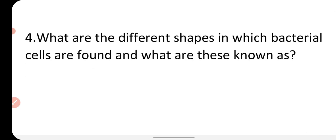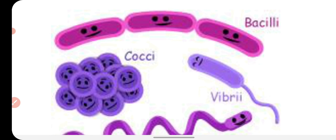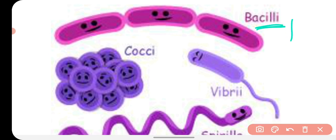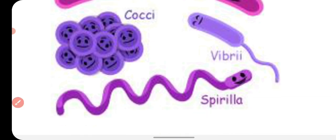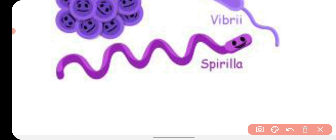The next question is: what are the different shapes in which bacterial cells are found and what are these known as? The main basic shapes are: first, bacilli, which occurs in rod shape; second, cocci, in which the shape of the bacteria is rounded or spherical; third, vibrio, in which the shape is in the form of a comma; and spirella, which occurs in the form of a spring.